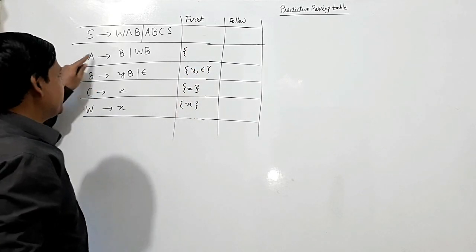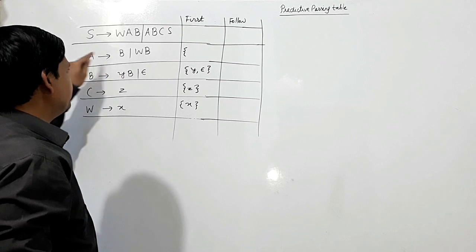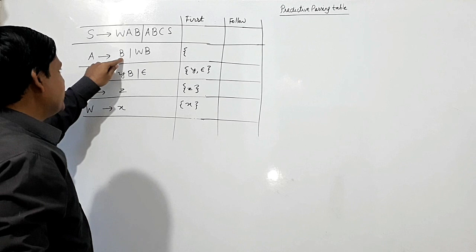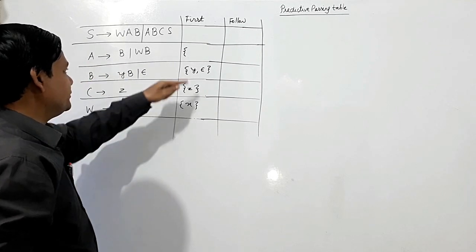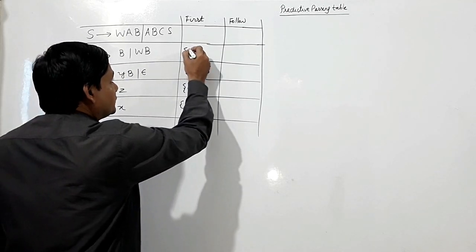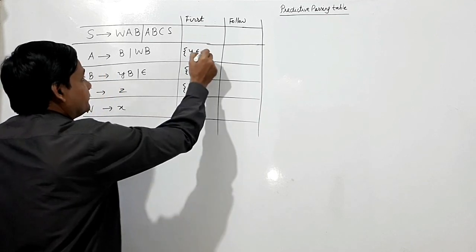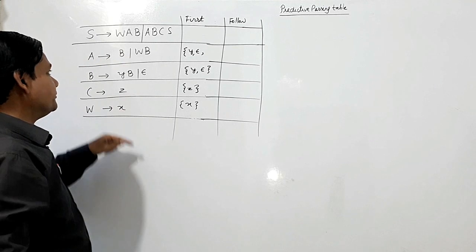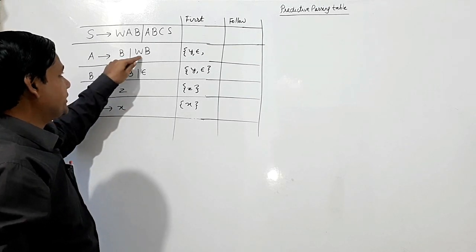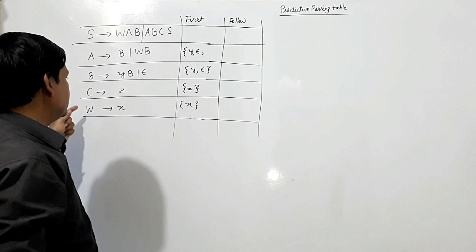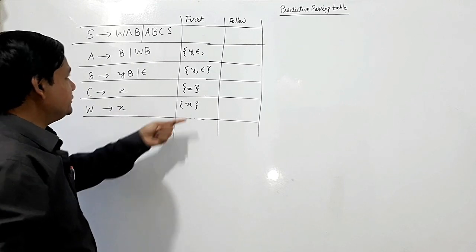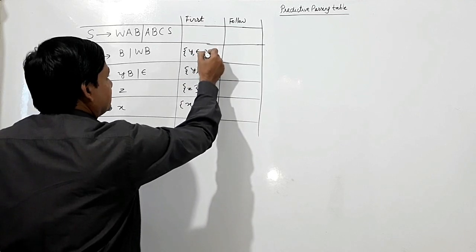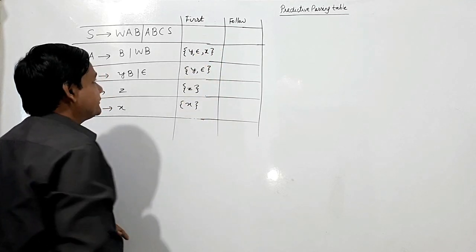For A: A depends on B. If we take the production A produces B, first of A will be the same as first of B, which is Y and Epsilon. If we take the production A produces WB, then first of A will be the same as first of W. First of W is X, so I will add X to first of A.